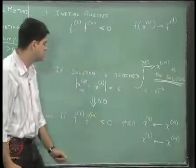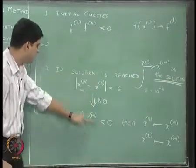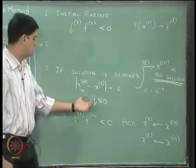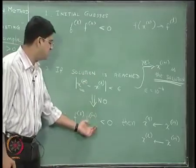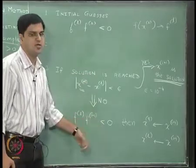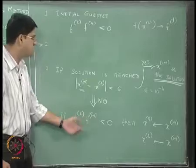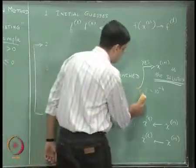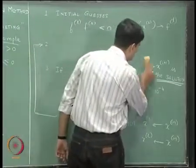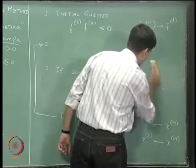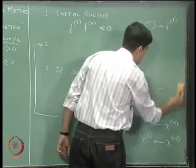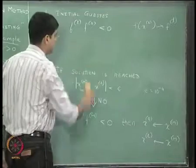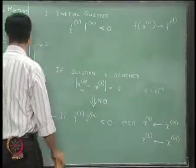If the solution is not reached, then we will either replace x_l with x_{i+1} or we will replace x_r with x_{i+1} and we will continue further. This part remains the same; it is only the step for finding x_{i+1} where we are going to change.